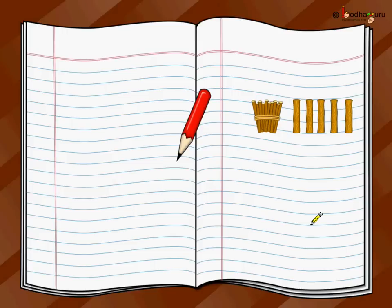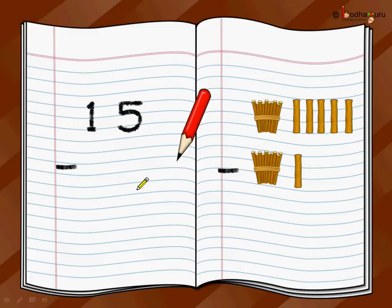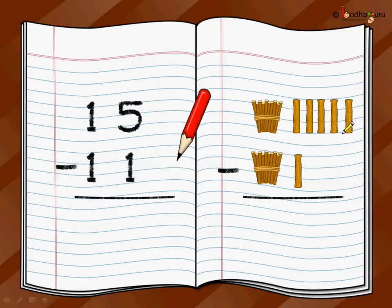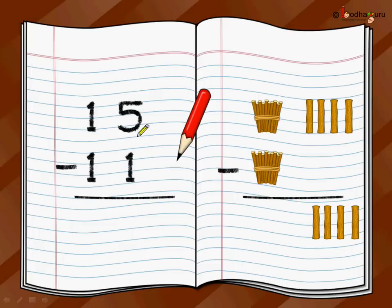Let us take another example. You have fifteen sticks, and from that you want to remove — minus sign — eleven sticks from it. Again, start from the loose sticks or the ones position. You have five loose sticks, from which you want to remove one stick, so you just strike it off. You are left with four sticks. Same way in numeric fashion: five minus one is equal to four.